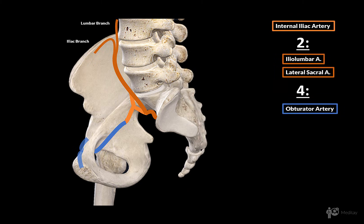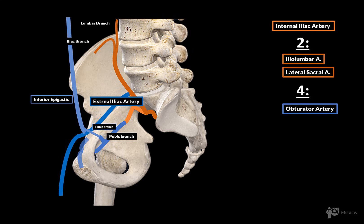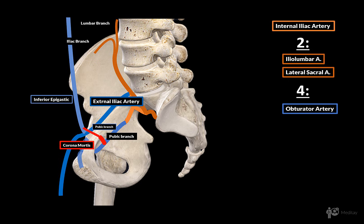On its pathway the obturator artery gives off two side branches. One is called the pubic branch, which anastomoses with the pubic branch of the inferior epigastric artery. When they connect, they get the name corona mortis, which translates as the crown of death. This indicates the importance of this structure in orthopedic surgery, because accidental damage to it can cause significant hemorrhaging which may be difficult to achieve hemostasis for, and so it must be considered cautiously during surgery.